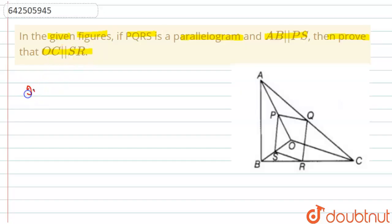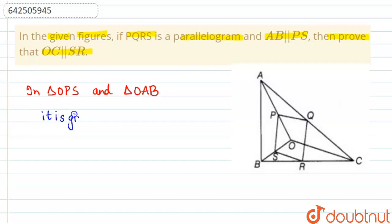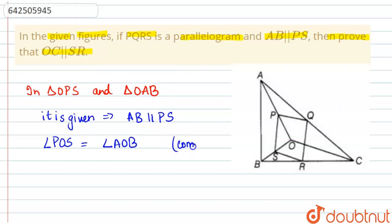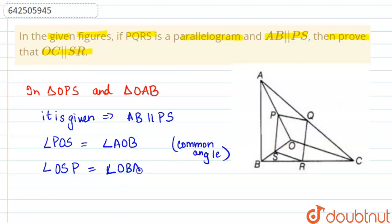We will start with triangle OPS and triangle OAB. We know that PS is parallel to AB — it is given. Angle POS is equal to angle AOB because it is a common angle. Angle OSP is equal to angle OBA as they are corresponding angles, since the lines are parallel.